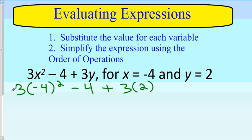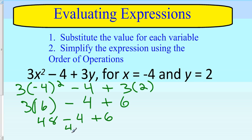First, using the order of operations, I'll use the exponent. Negative 4 squared: negative 4 times negative 4 is positive 16. So 3 times 16 minus 4 plus 3 times 2, which is 6. 3 times 16 is 48 minus 4 plus 6. Add and subtract from left to right: 48 minus 4 is 44 plus 6, which equals 50. And that is how you evaluate expressions.